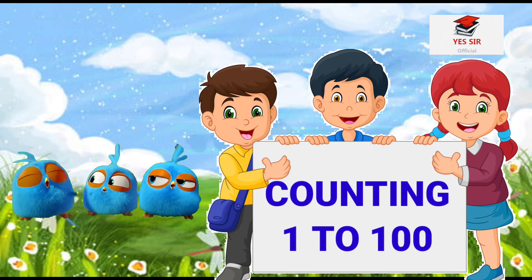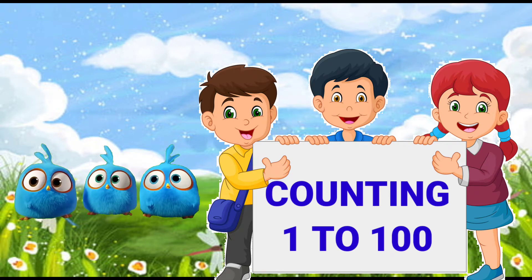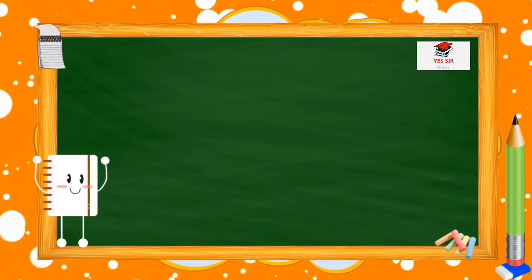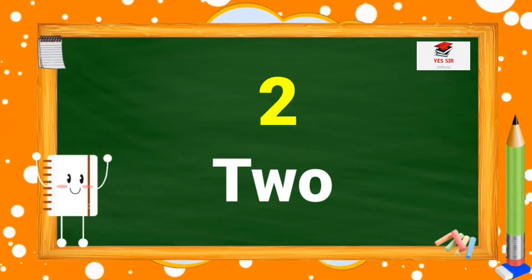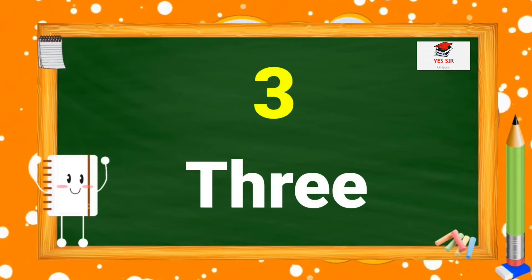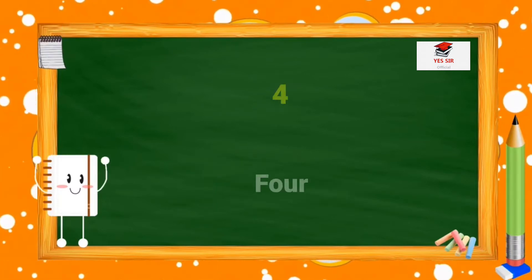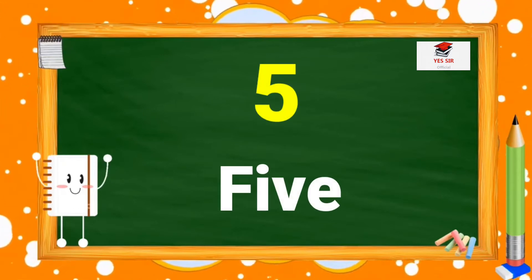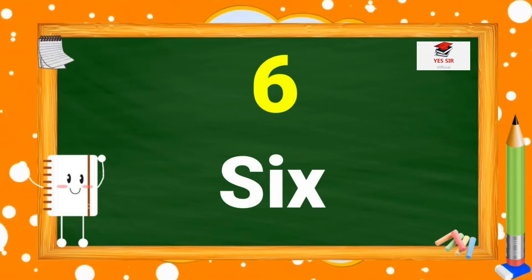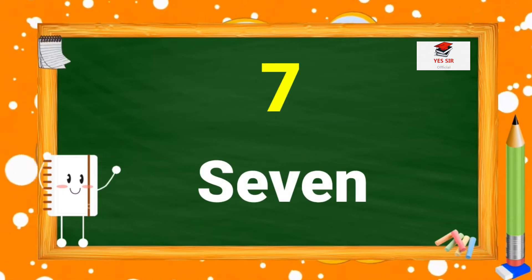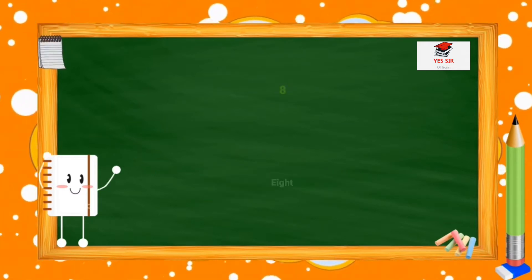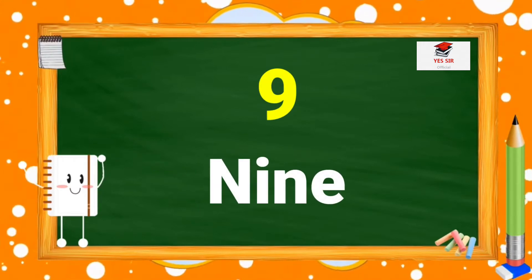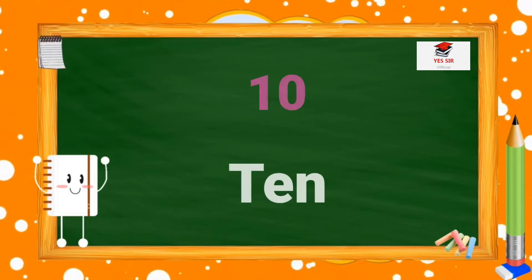Our first chapter is counting 1 to 100. 1, 2, 3, 4, 5, 6, 7, 8, 9, 10.